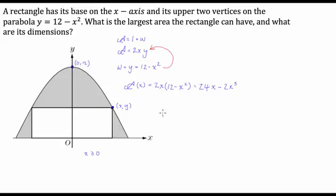This is where the optimization comes in. We're going to differentiate area in terms of x with respect to x, so we're going to go dA/dx, and this is going to be equal to 24 minus 2 times 3 is 6x squared.